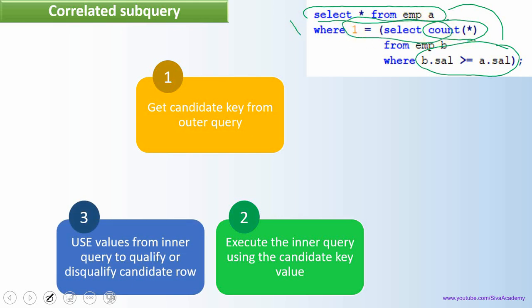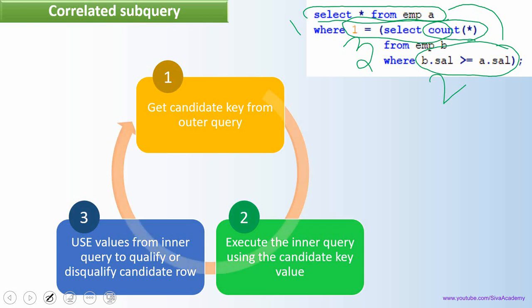So the first step is fetching a row from the outer query, the second step is executing the inner query, and the third step is evaluating the condition. If the condition is satisfied, the particular row from the outer query is qualified for display. This keeps continuing in a loop until all records of the outer query are evaluated. This is the main difference — let us now understand it in detail with an example.